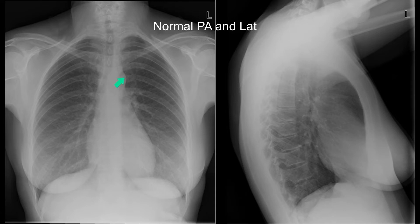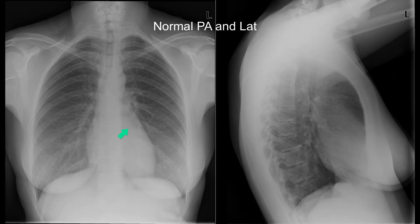Here's the aortic knuckle. Here's the pulmonary trunk. There's the left main pulmonary artery. There's the right main pulmonary artery. The left atrial appendage isn't seen on this study but is in this vicinity. Here's the left ventricle. The left atrium is posterior. The right atrium forms the right heart border.